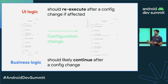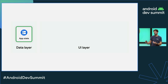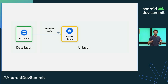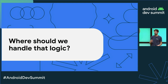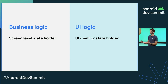Given the different types of state and logic in our application, let's see how they relate. We observe application state from the data layer in the UI layer, apply business logic to produce our screen UI state, and then apply UI logic to modify our UI element state. The business logic complexity should be handled in a screen-level state holder, and the UI logic should be handled in the UI itself or in another state holder. Both types of state holders can be implemented with plain classes.